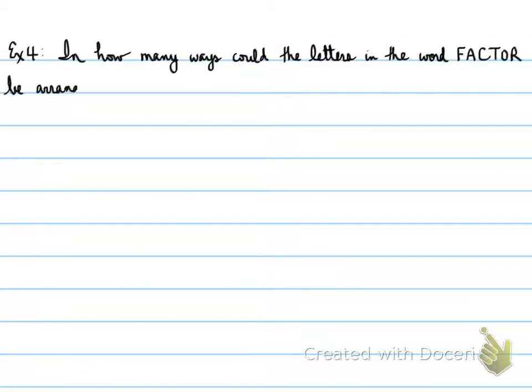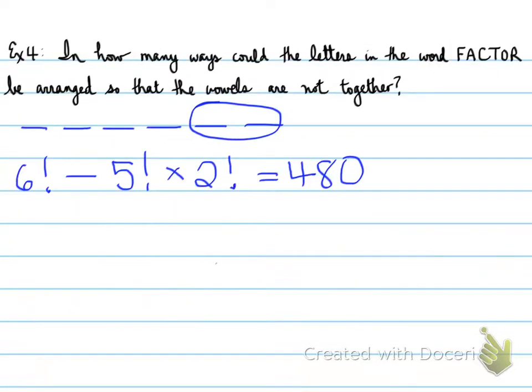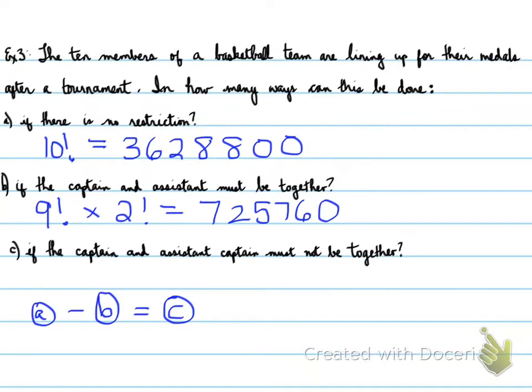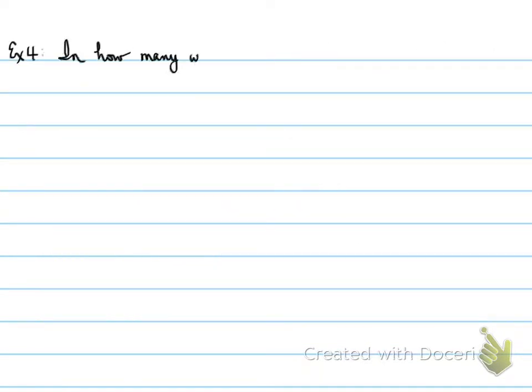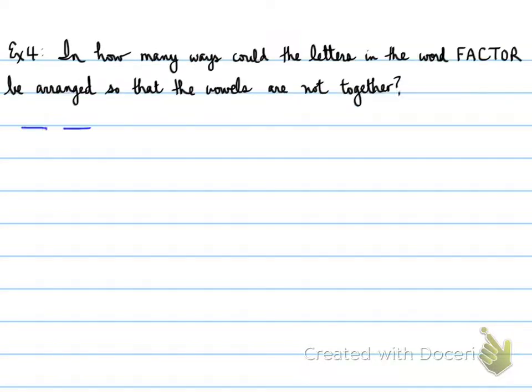One more example. Example 4. In how many ways could the letters in the word FACTOR be arranged so that the vowels are not together? Remember, what are vowels? Let me get you to understand this for a second. One more time: In how many ways could the letters in the word FACTOR be arranged so that the vowels are not together? What's a vowel? Hopefully you're thinking A-E-I-O-U. There are two vowels right here: A and O.